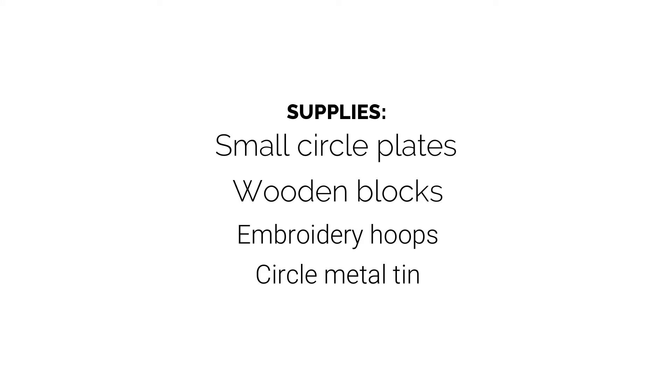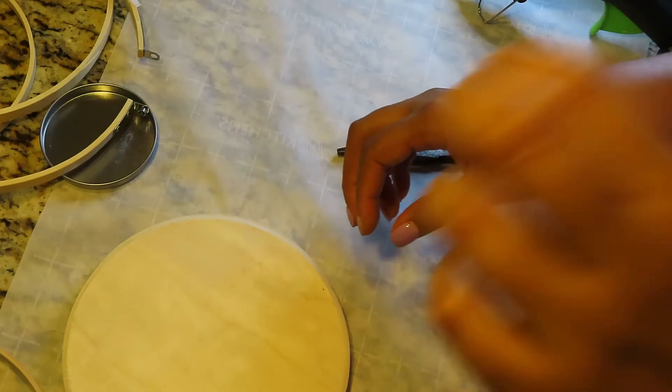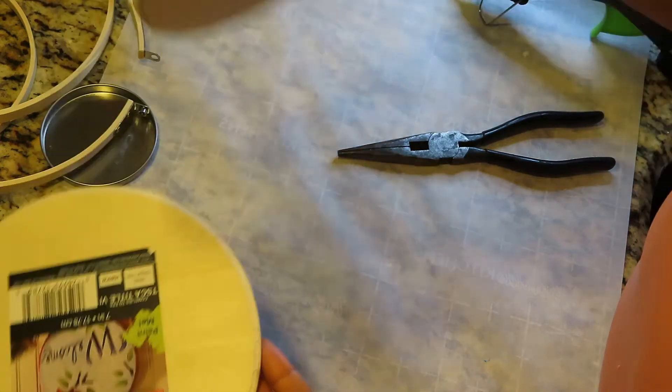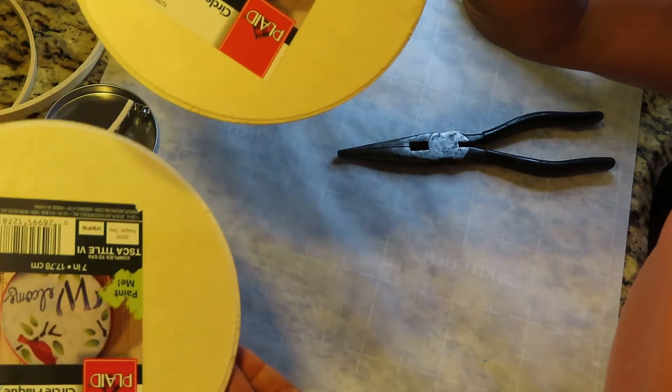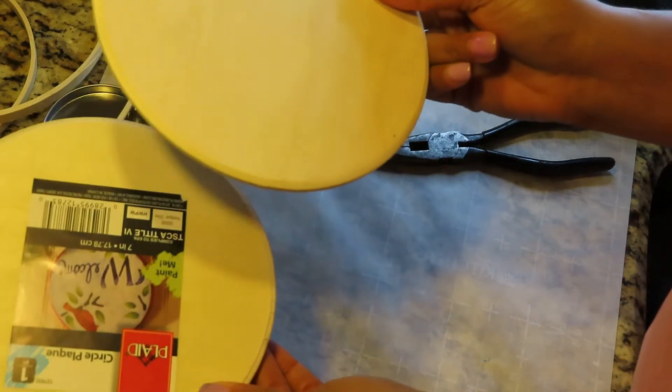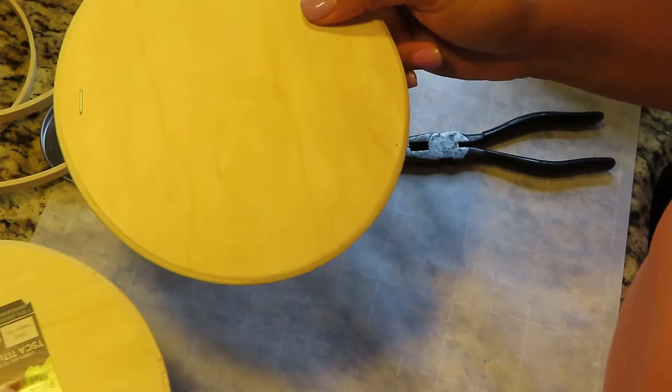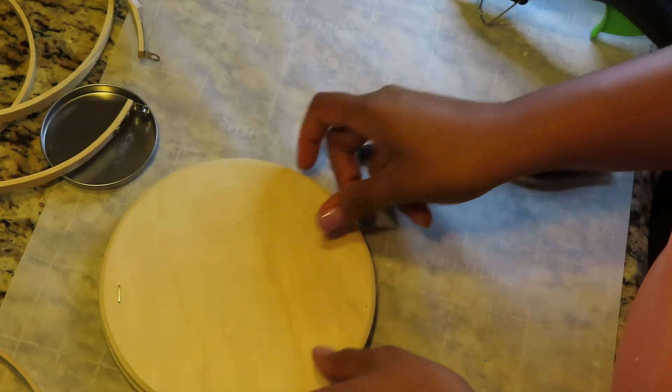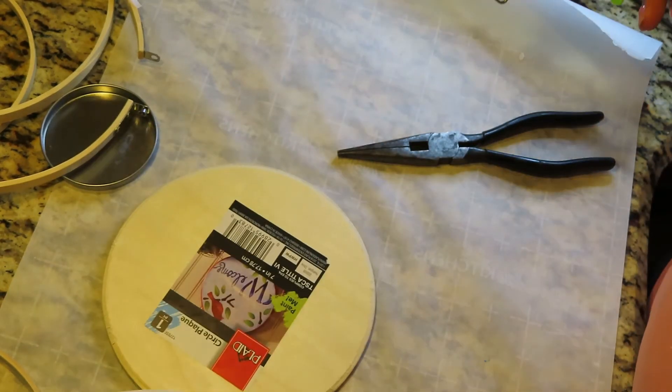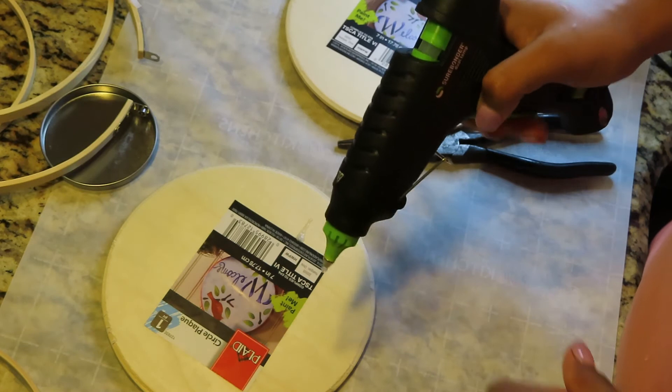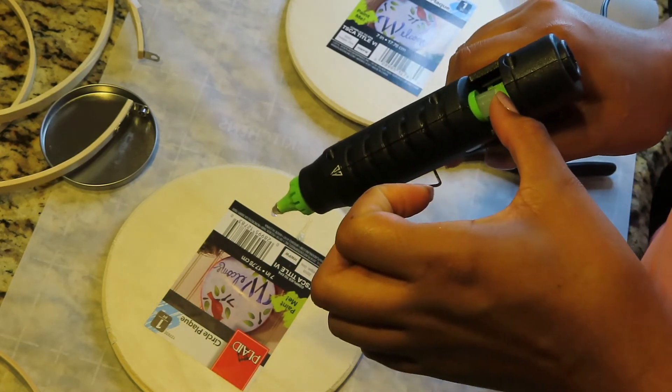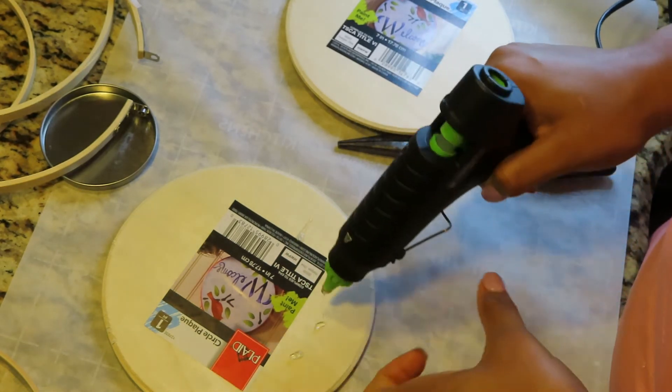For the second project, here's the list of supplies needed. I bought these two wooden circles from Walmart, they were ninety-seven cents each, and took some hot glue and placed it on the bottom piece of wood.